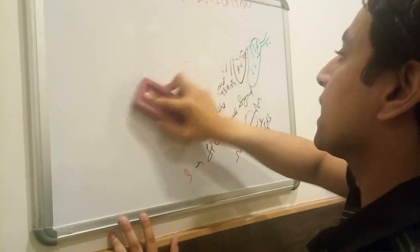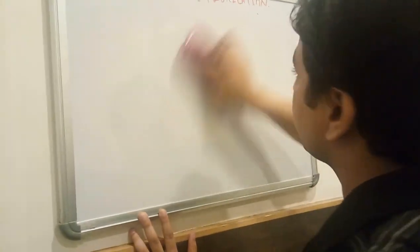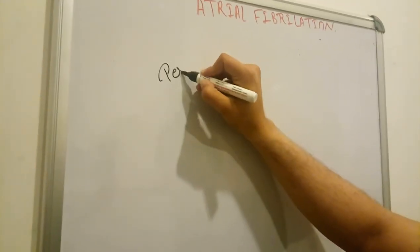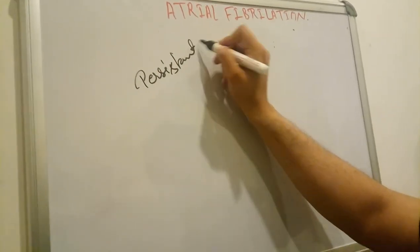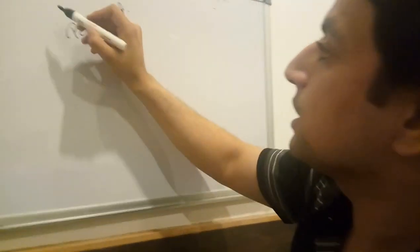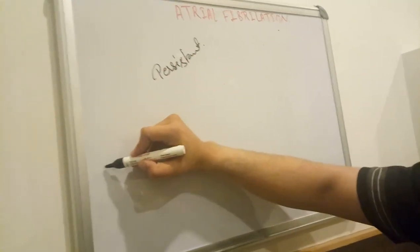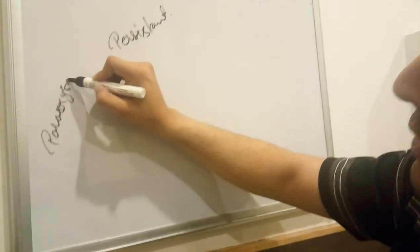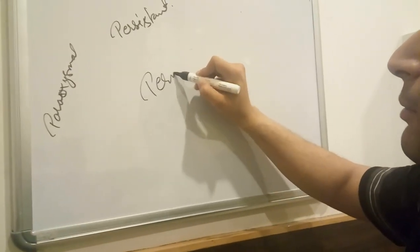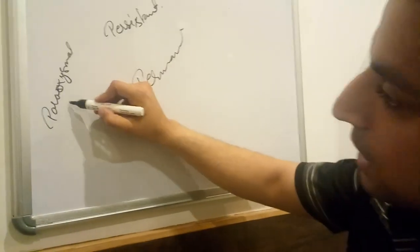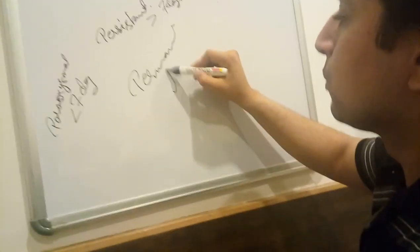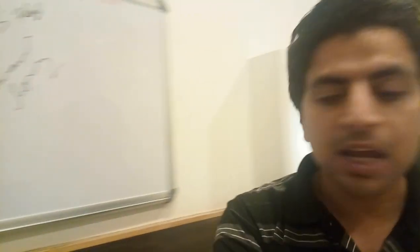Now the classification of atrial fibrillation — three types: paroxysmal, persistent, and permanent. Paroxysmal means atrial fibrillation lasting less than 7 days. Persistent means more than 7 days with recurrent episodes. Permanent means a very long period of atrial fibrillation. I hope the differences between paroxysmal, persistent, and permanent are clear.